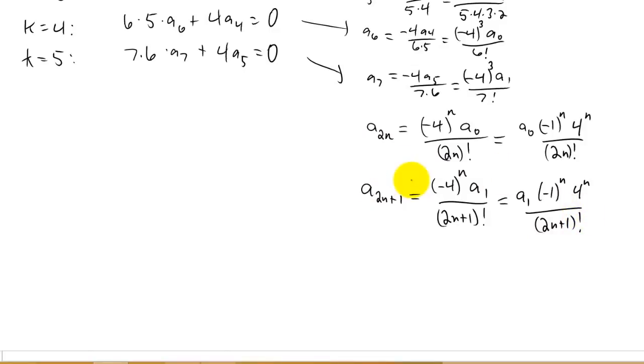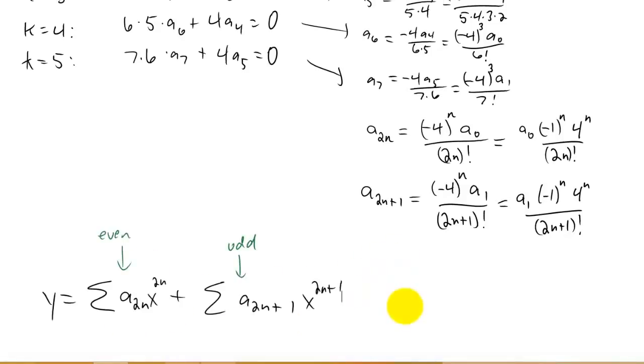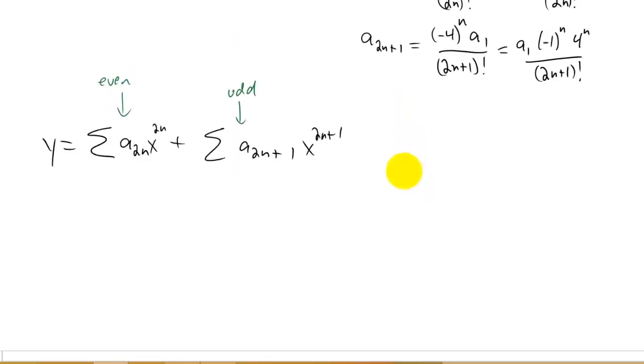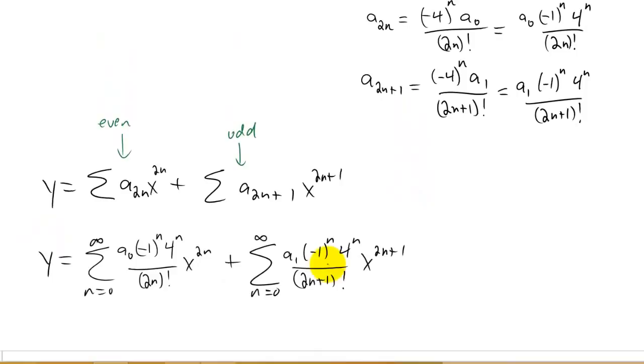All of our even coefficients look like this and all of our odd coefficients look like this. But it's just a sum, so we can group all of our even coefficients together into one sum and all of our odd coefficients together into another sum. Our solution to the differential equation is going to be split up into those two pieces.